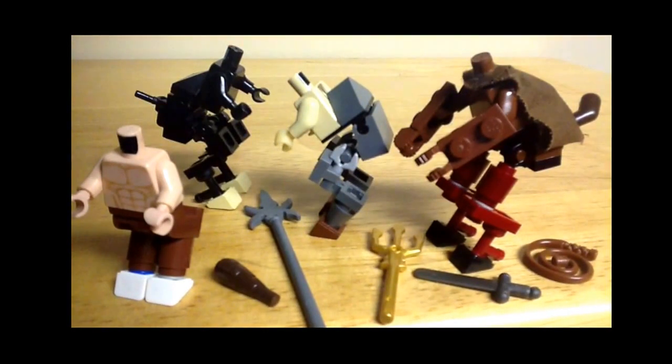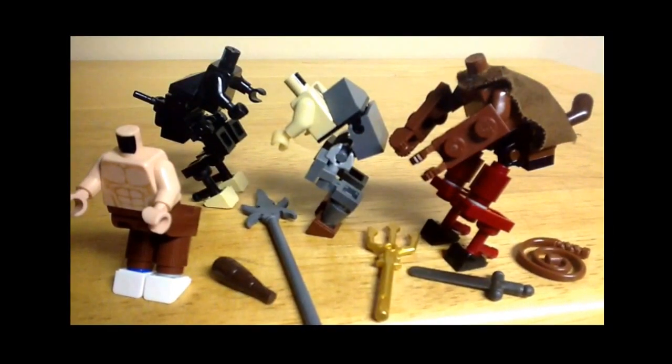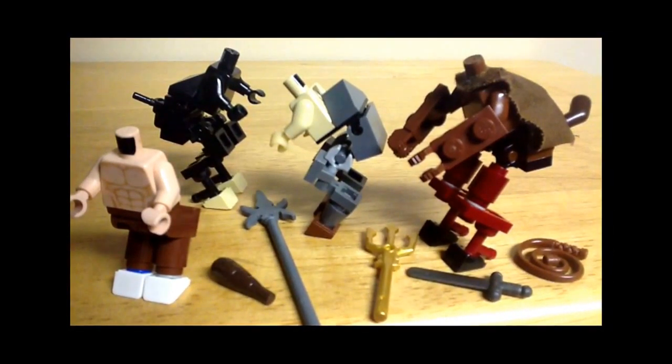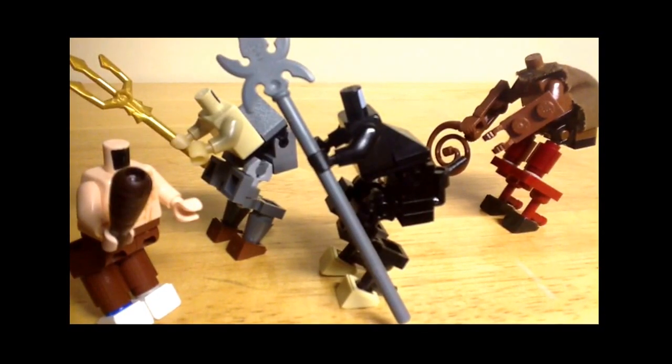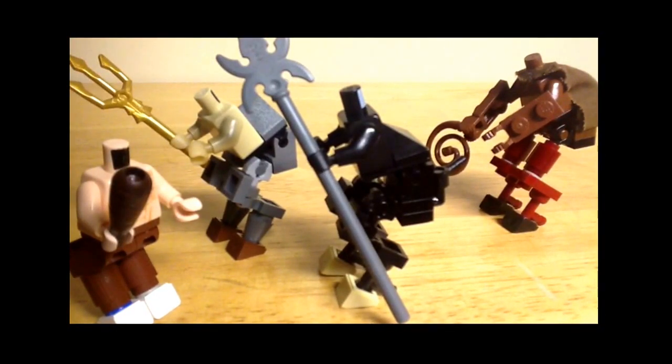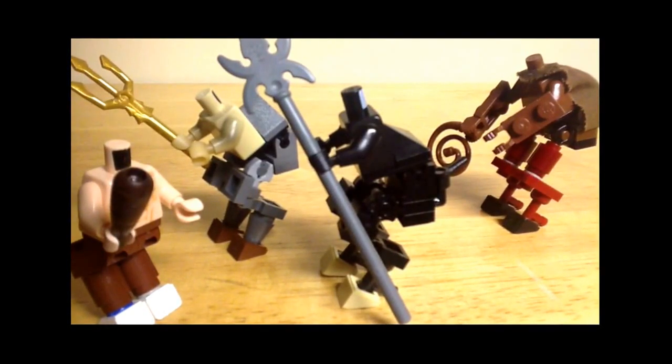Now give your minotaur a weapon, give him a trident, give him a whip, give him a sword, a spear, a club, whatever. And now we get to the most important part, the head. I will show you three ways of making it, and which one you decide to make depends on what type of pieces you have, and in what color.